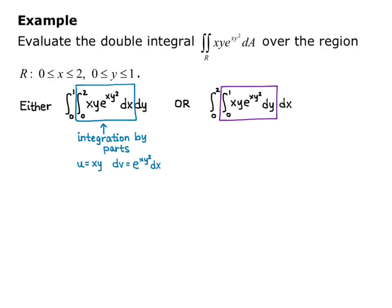For integration by parts, we need du and v. Taking the derivative with respect to x gives du = y dx. For v, taking the antiderivative with respect to x gives v = e^(xy²) / y². Then the integral from 0 to 2 of xy·e^(xy²) dx equals uv minus the integral of v du, requiring us to work through that whole process and then compute a second integral.